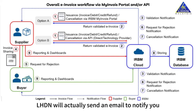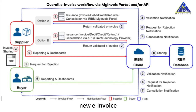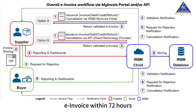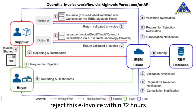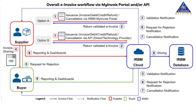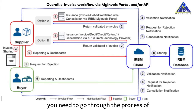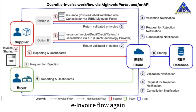At this point, LHDN will send an email to notify you and another email to notify your customer about the new e-invoice. You have the right to cancel this e-invoice within 72 hours, and your customer also has the right to reject it within 72 hours. Any cancellations or rejections after 72 hours must go through the credit note and debit note process, which also needs to go through the e-invoice flow again.